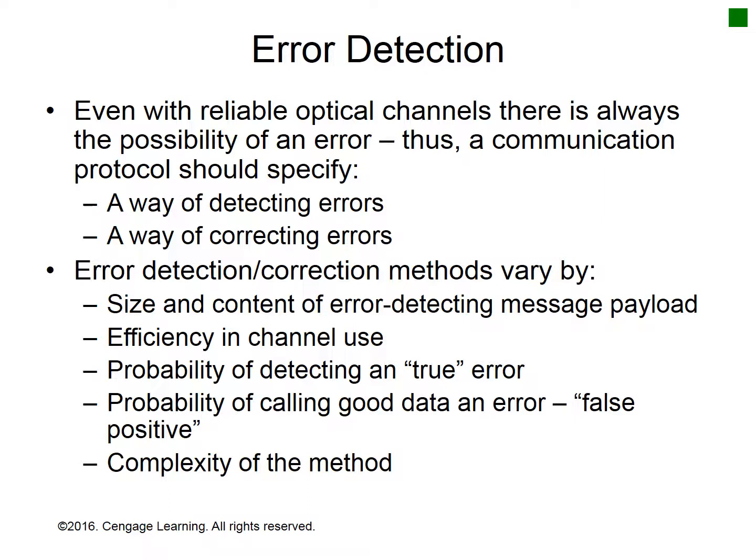Error detection is always based on some form of redundant transmission. The receiver compares redundant copies of messages and requests re-transmission if they don't match. Increasing the level of redundancy increases the chance of detecting errors, but at the expense of reducing channel throughput. Common error detection schemes include parity checking, vertical redundancy checking, block checking (longitudinal redundancy checking), and cyclic redundancy checking.